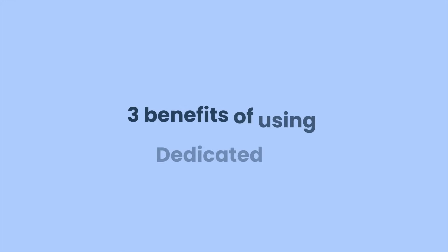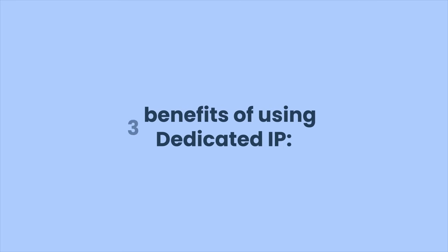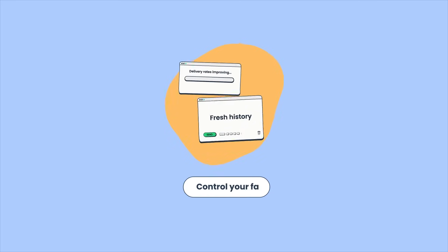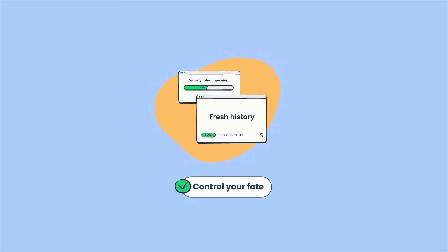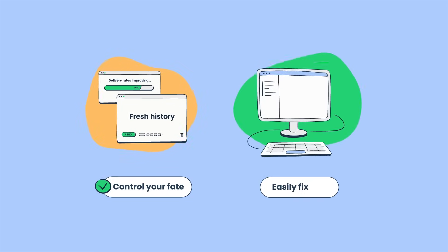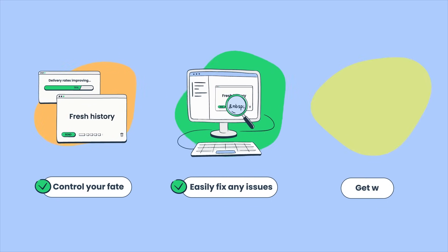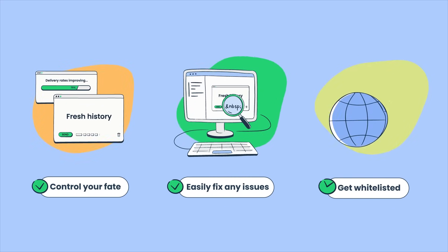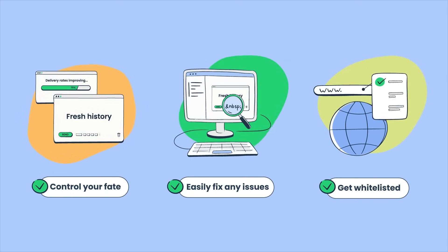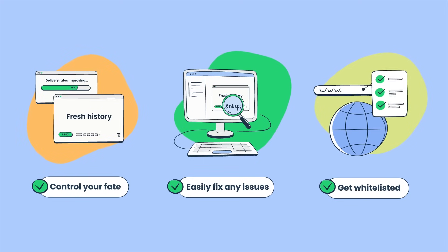There are three benefits of using a dedicated IP. Firstly, you build your sending history from scratch, and if done right, it leads to improved delivery rates. Secondly, dedicated IPs allow you to identify and resolve delivery problems quickly. And lastly, with a dedicated IP, you can request whitelisting with internet service providers, improving deliverability.